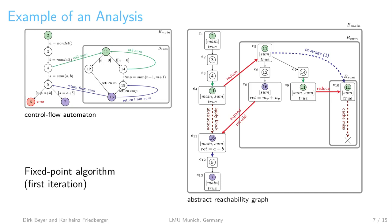Afterwards, the CPA algorithm continues with the successor computation until it reaches the program exit. In this iteration, we did not yet reach any property violation, but we also did not yet prove safety of the program because we did not yet apply our procedure summary within the procedure block. Thus, we need a second iteration of the fixed-point algorithm.